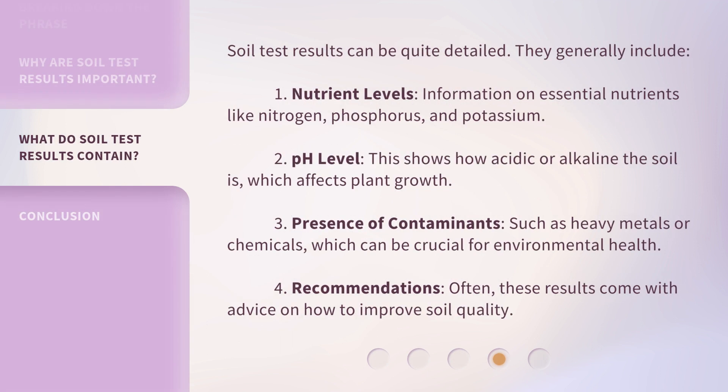Soil test results can be quite detailed. They generally include: 1. Nutrient levels — information on essential nutrients like nitrogen, phosphorus, and potassium. 2. pH level — this shows how acidic or alkaline the soil is, which affects plant growth. 3. Presence of contaminants — such as heavy metals or chemicals, which can be crucial for environmental health. 4. Recommendations — often, these results come with advice on how to improve soil quality.